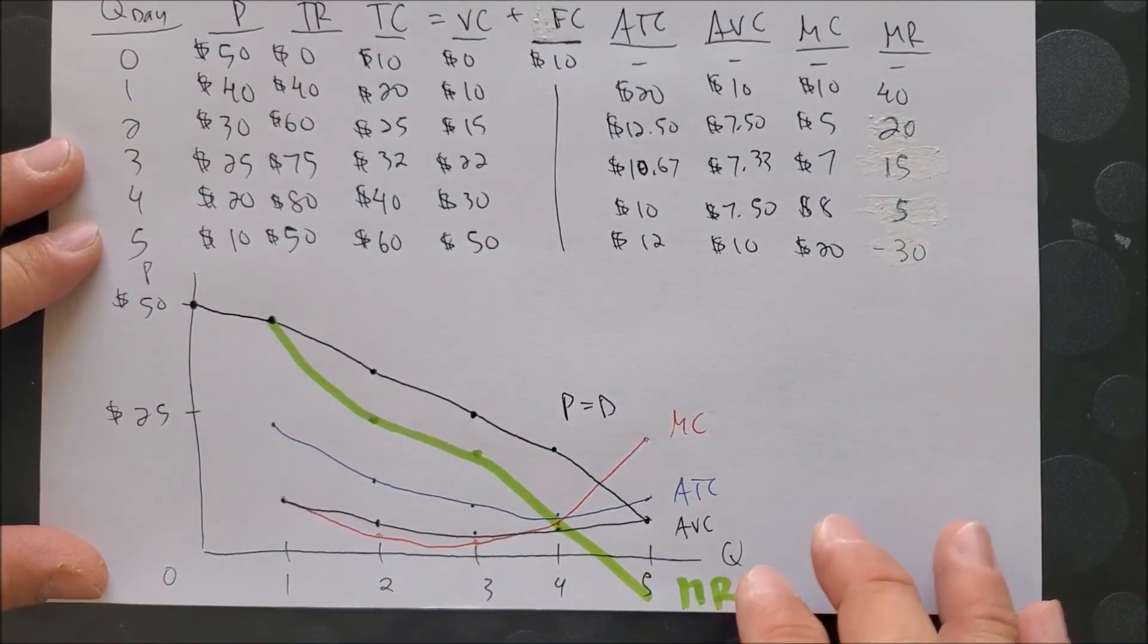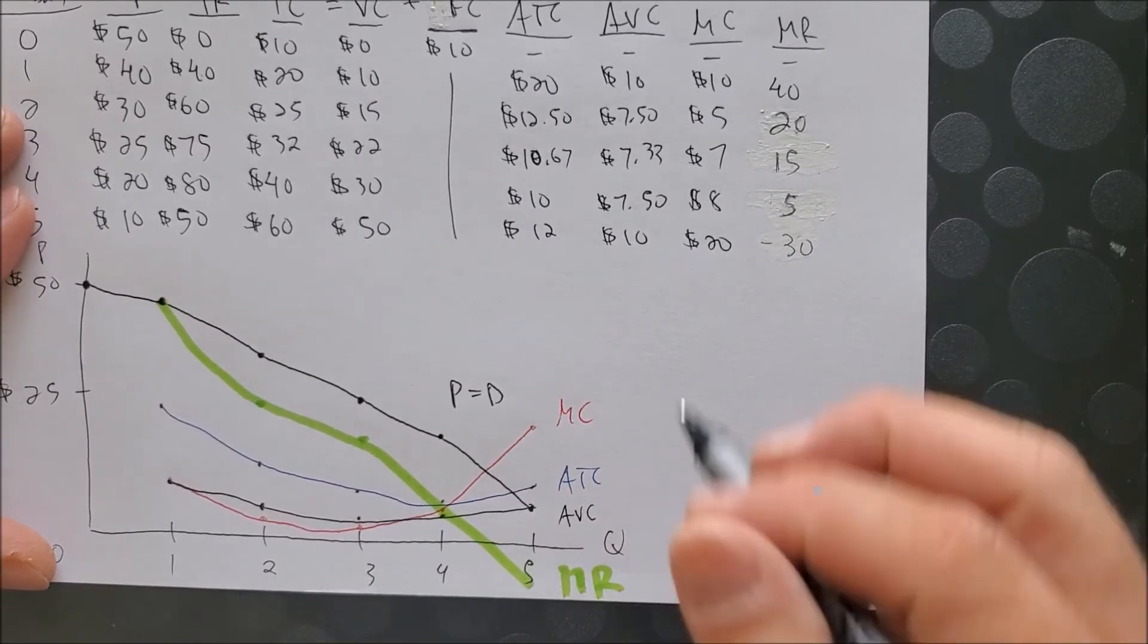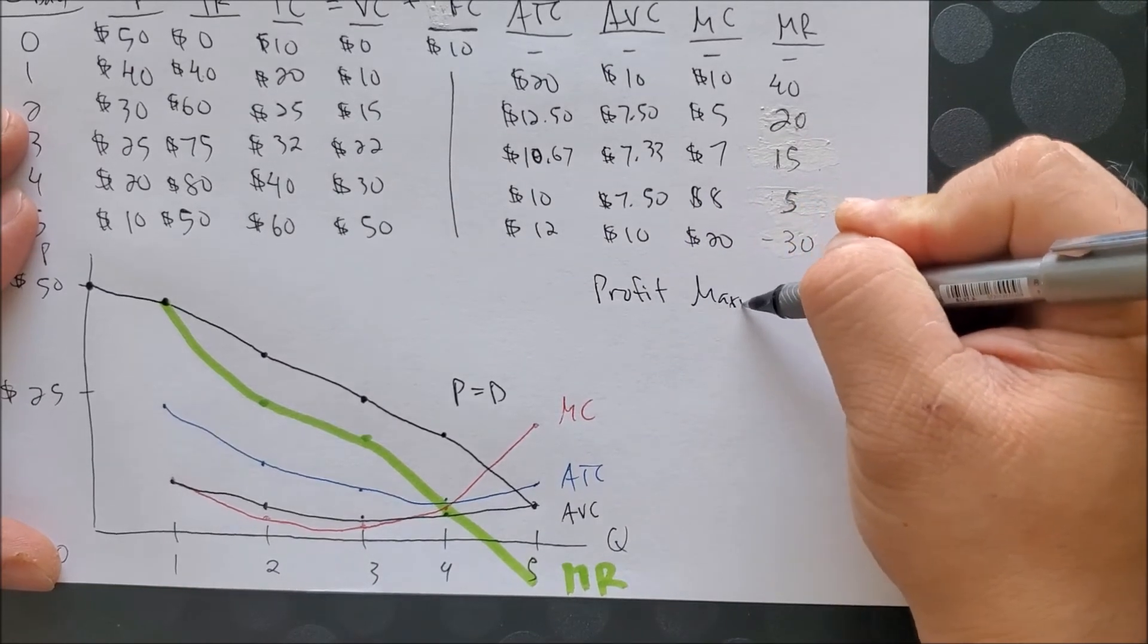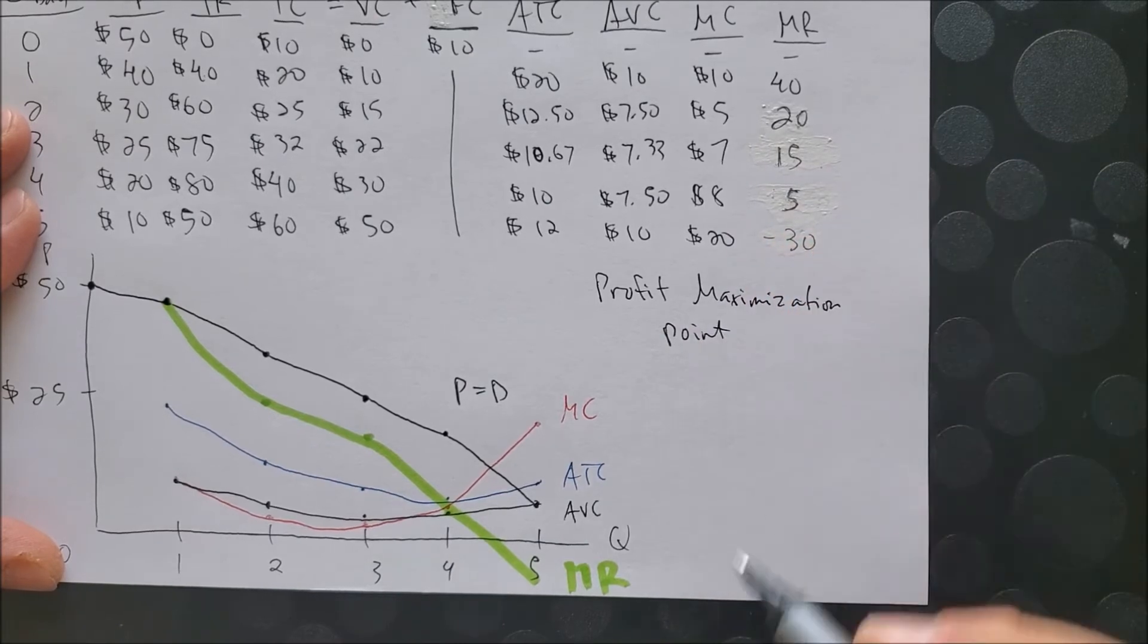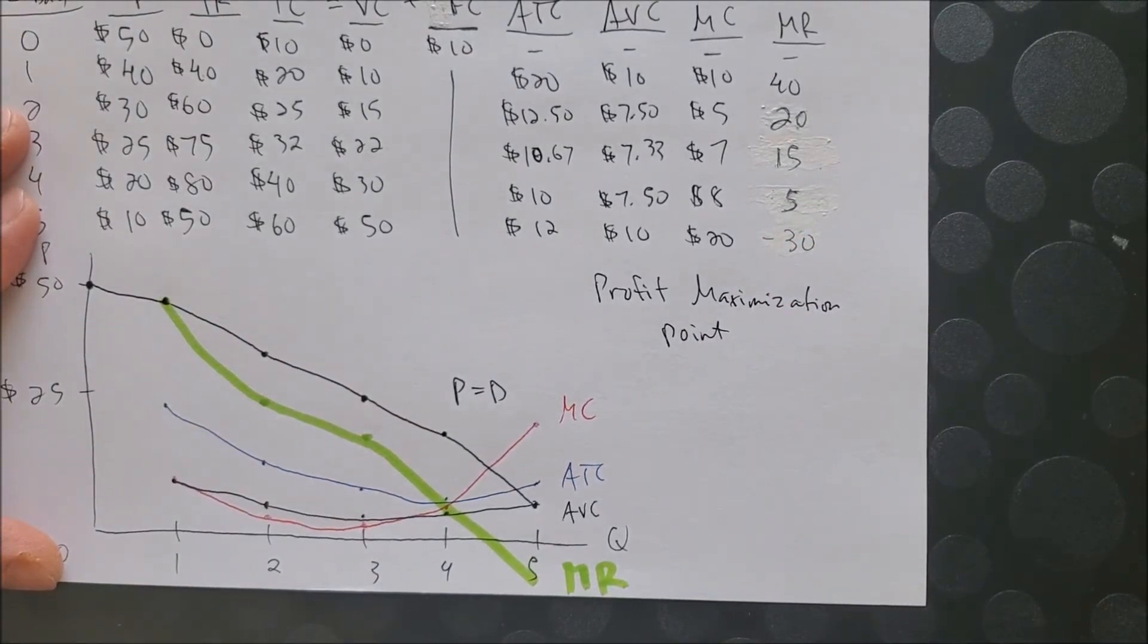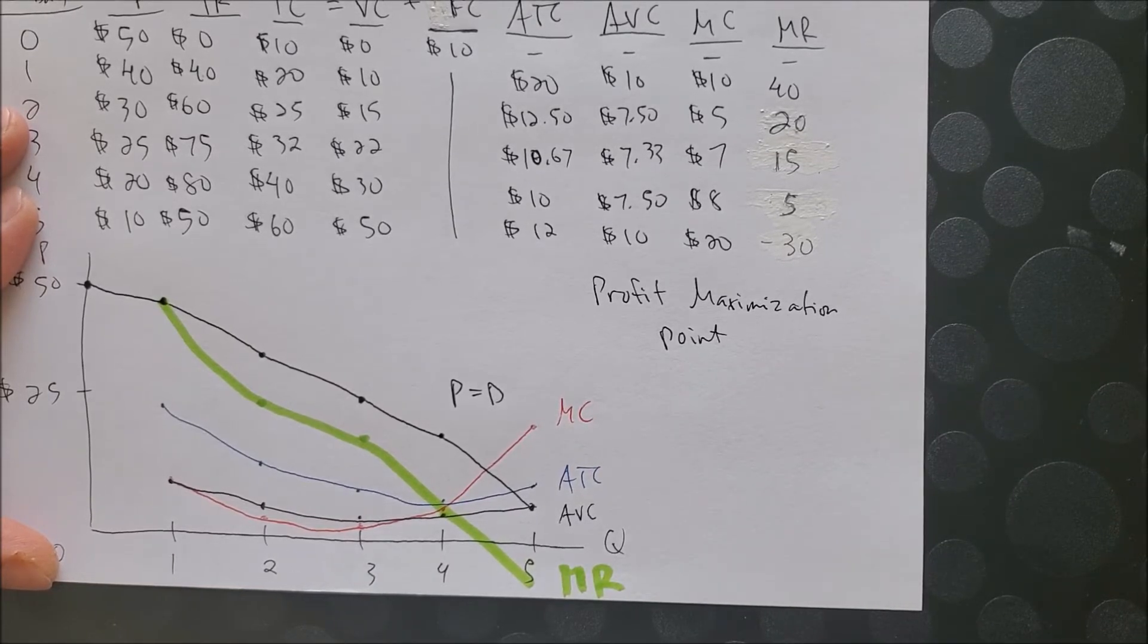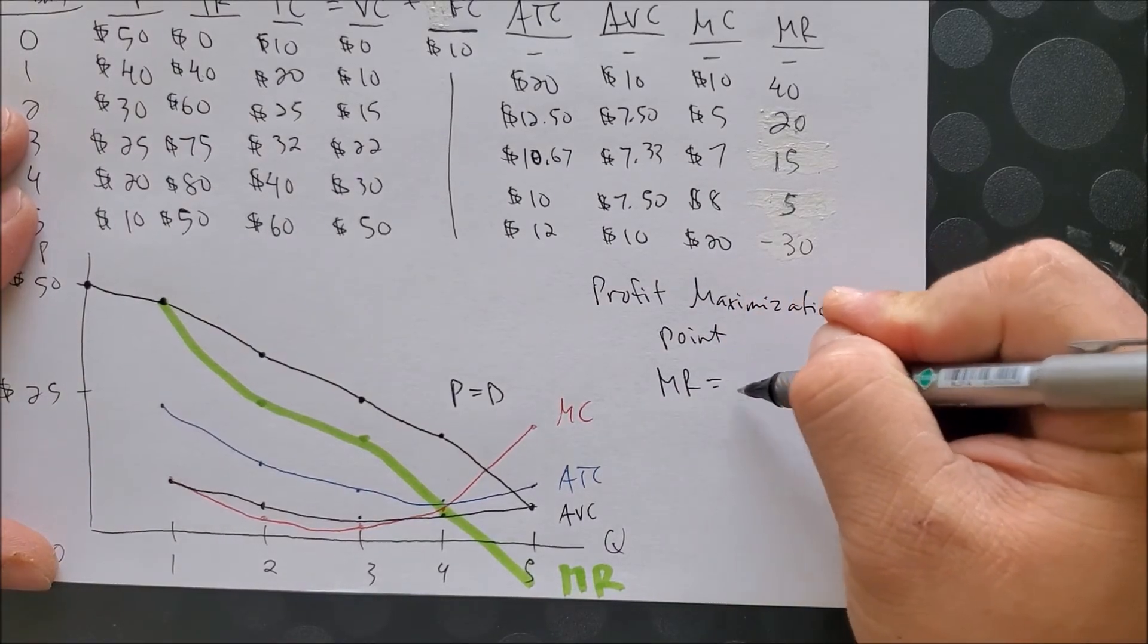So again, like most companies, they are trying to find where they can maximize profit, what we call the profit maximization point. And again, this is not how much they can make, but at the last unit of production, how much profit they can make before marginal cost exceeds marginal revenue. So it's the last point to make profit. And this is where MR equals MC.